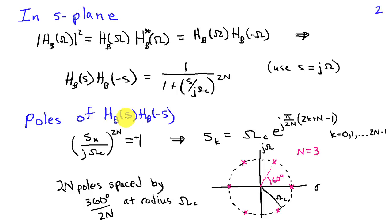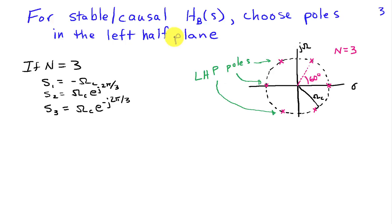Now, these are the poles of Hb of s times Hb of minus s. So, we need to decide how to choose which poles belong to Hb of s. If we want a system that's stable and causal, then we're going to have to use the poles in the left half of the s-plane and associate those with Hb of s. So, these poles here are associated with Hb of s, and then these other ones would be associated with Hb of minus s in the case when n is equal to 3.